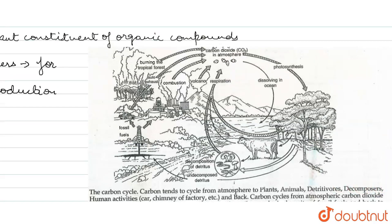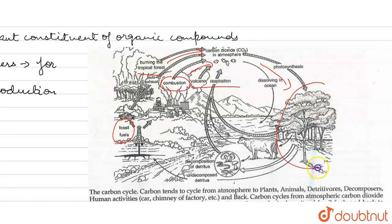When we burn tropical forests, carbon dioxide is released. Burning fossil fuels through combustion also releases carbon dioxide. Volcanic eruptions and respiration also release CO2 into the atmosphere. Photosynthesis by plants is the only process that converts CO2 into O2. Deforestation — cutting plants — is increasing the problem, because plants are the only organisms that convert CO2 into O2 and maintain balance.